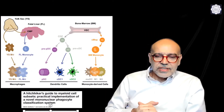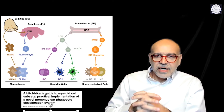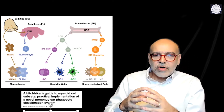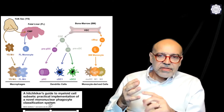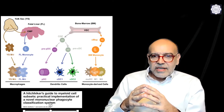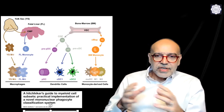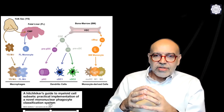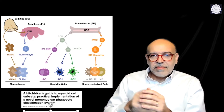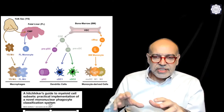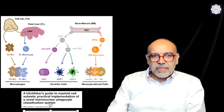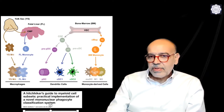Histiocytosis refers to a group of neoplastic disorders that has to do with proliferation of cells of the mononuclear phagocyte system, which are the monocytes, the macrophages, and the dendritic cells. This group of cells can transform into each other depending on the context and activation; some have a pro-inflammatory profile, some an anti-inflammatory profile. Most of them derive from the bone marrow from a stem cell, but some derive from the yolk sac — for example, the microglia of the brain.